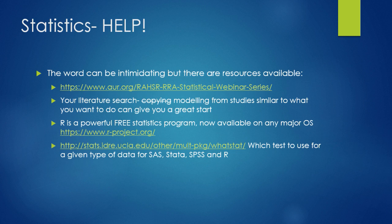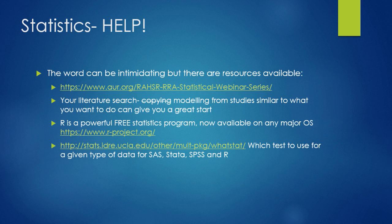There are a lot of resources out there that are helpful. The RRA and Razor had a series of statistical webinars presented over the past year, available on the AUR website on a variety of statistical topics for everyone to view. You can also see how other people have done analyses in the literature. Software options include R, and Excel is actually really easy for simple stuff, with several other packages available for more complicated data analysis.